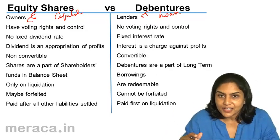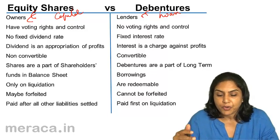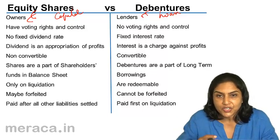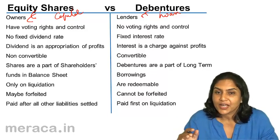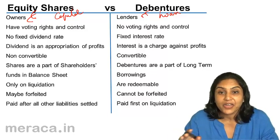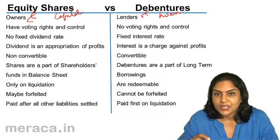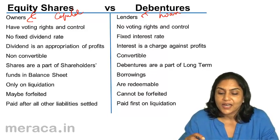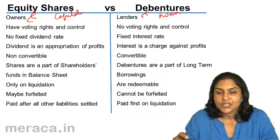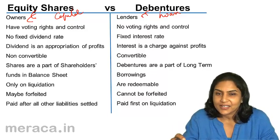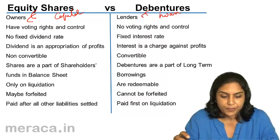The other things regarding the issue, the process, the fixed denomination, etc., are very similar. But equity shares represent the owner's stake. Debentures represent only a creditor, a lender. It's a loan, a liability.